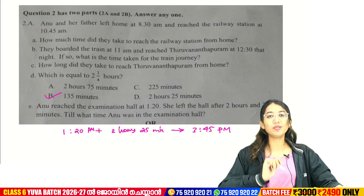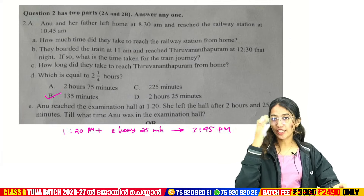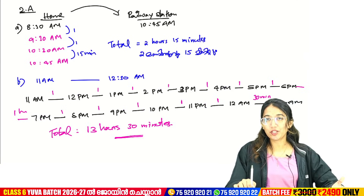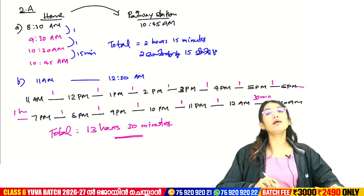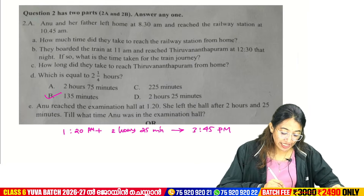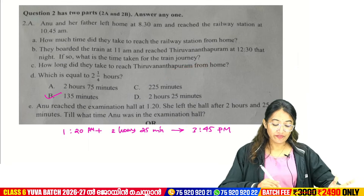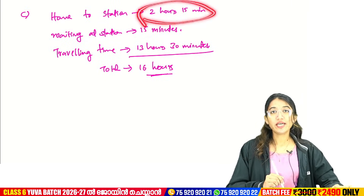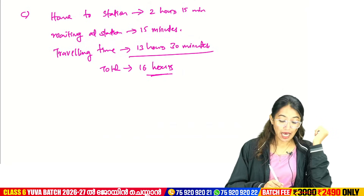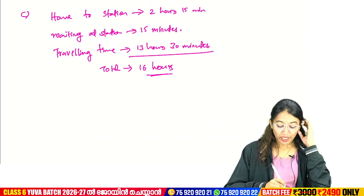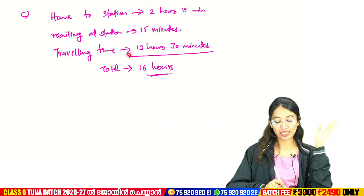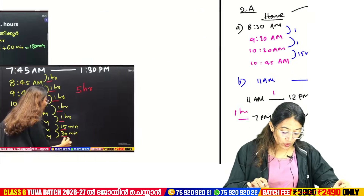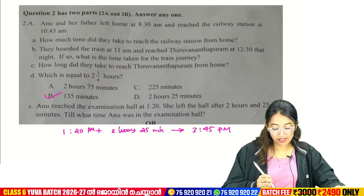They boarded the train at 11am and arrived at 12am. How long did they take to reach the station from home? The travel time to the station was 2 hours 15 minutes. We arrive at the station. Then there are 15 minutes left. Traveling time: we arrive at the station at 12. That's 13 minutes. It takes 14 minutes. Which is equal to 2 and 1 by 4 hours — 2 hours per hour.